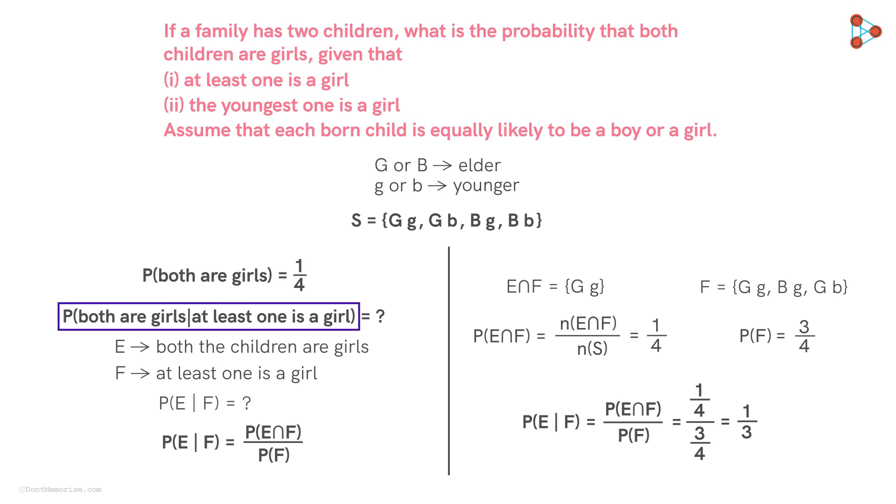Hence, the probability that both children are girls given that at least one of them is a girl is equal to 1 by 3.